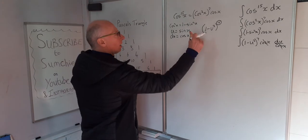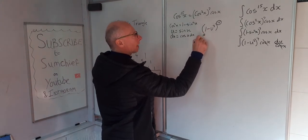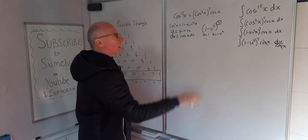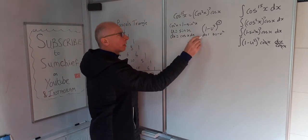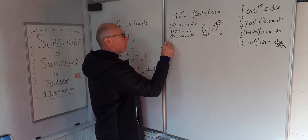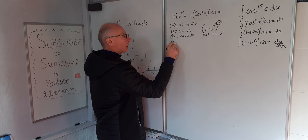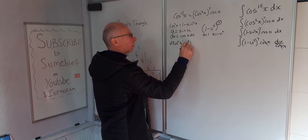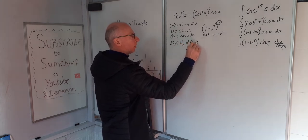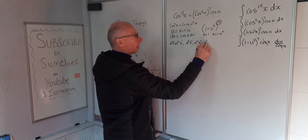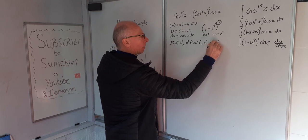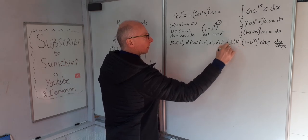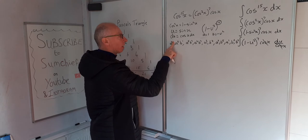Bearing in mind we have (1 minus u²)⁷, we set a equals 1 and b equals negative u squared. We write this out building up the powers: a⁷b⁰, a⁶b¹, a⁵b², a⁴b³, a³b⁴, a²b⁵, a¹b⁶, and finally b⁷. Since a equals 1, any power of a is just 1, so we can take those out.